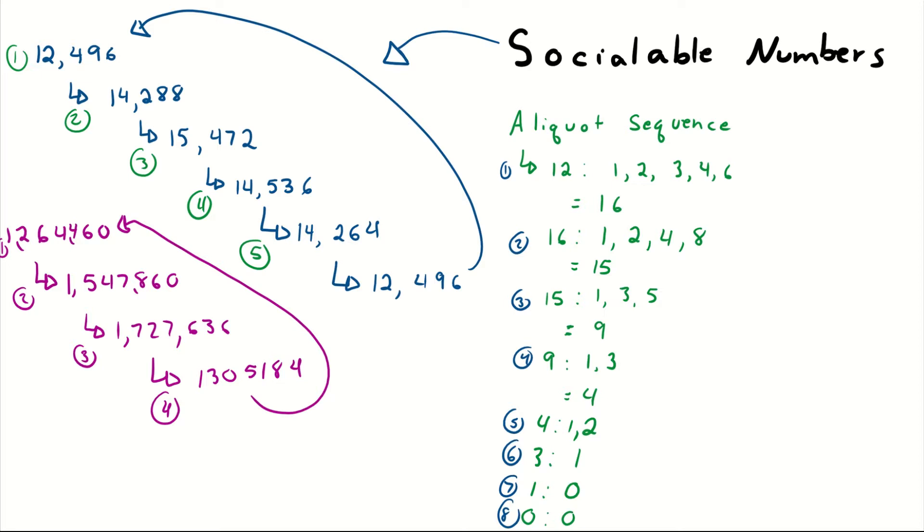So kind of interesting here, you've got the real lover of friends, 14,316. You take his divisors, you find some number, you take his divisors, you find some number, and it eventually repeats after 28 different numbers. So he's got the big group of friends. He's the life of the party, you could say.